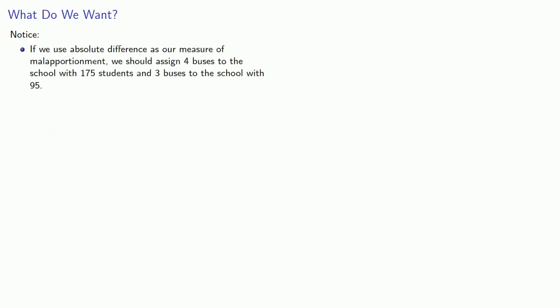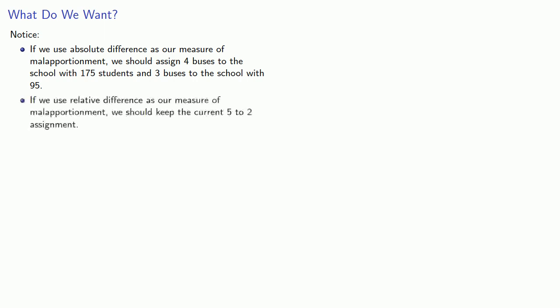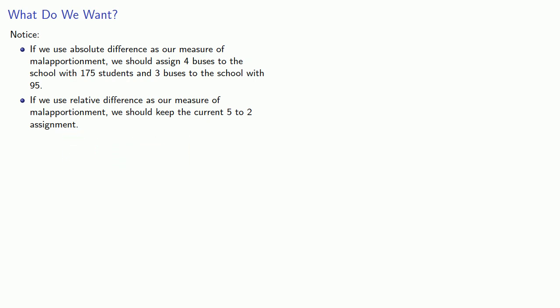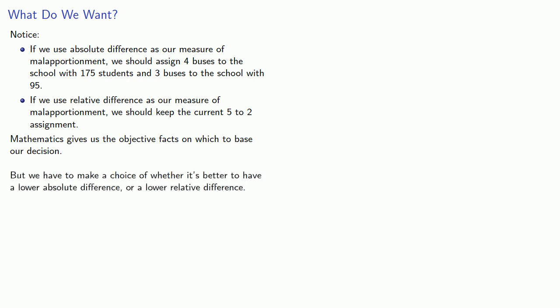Now we can make an informed decision. In the current scenario, the relative difference is 0.357. If we change the number of buses, that relative difference only goes up, meaning the current apportionment has the least malapportionment. Notice that if we use absolute difference as our measure, we should assign 4 buses to the school with 175 students and 3 to the school with 95. But if we use relative difference, we should keep the current 5 to 2 assignment. Mathematics gives us the objective facts, but we have to choose whether it's better to have a lower absolute or relative difference — that's not a question mathematics can decide.